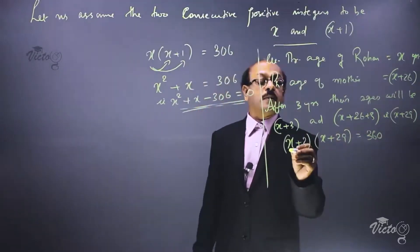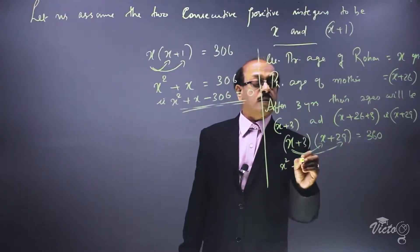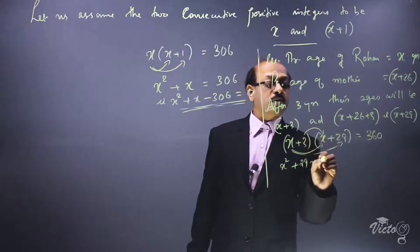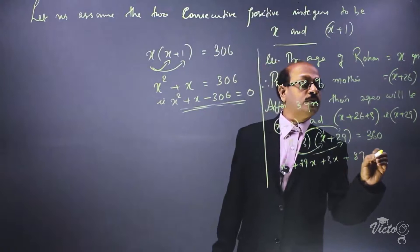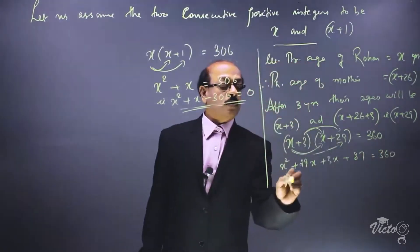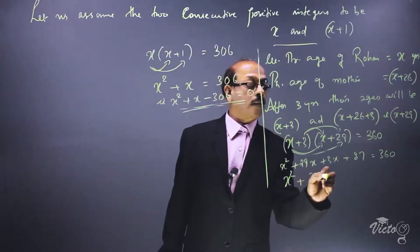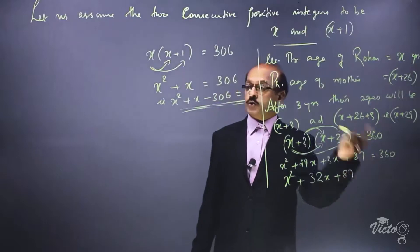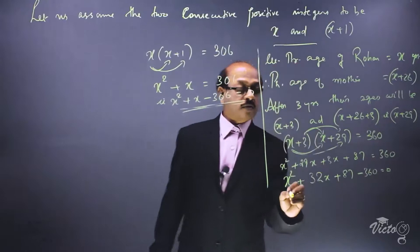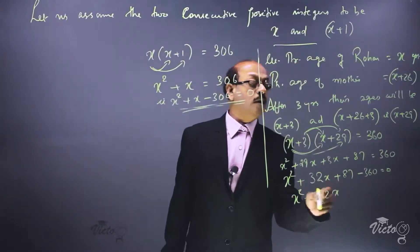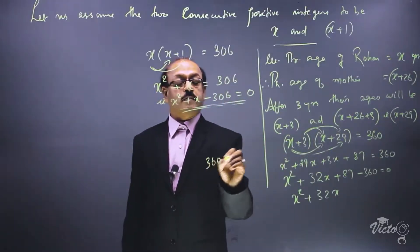Expanding: x into x gives x square, x into 29 gives 29x, 3 into x gives 3x, and 3 into 29 gives 87, equal to 360. So x square plus 32x plus 87 equals 360. Bringing 360 to the left side: x square plus 32x plus 87 minus 360 equals 0.